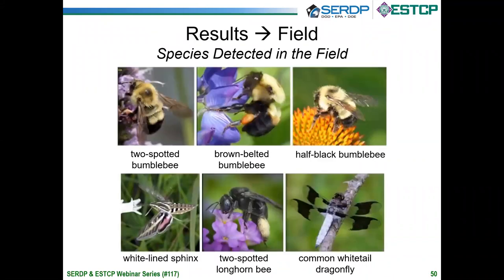In the field, we found similar results. We detected a number of pollinator species — most of which we didn't directly observe — and the residual DNA left on the flowers themselves was sufficient to capture the pollinator community visiting those flower beds. We also detected unexpected things: we weren't out at night, so we didn't visually observe any white-lined sphinx moths, but sure enough they showed up. We also appeared to have dragonflies that rested on these flowers. We were able to cobble together a really good picture of what sorts of arthropod species were visiting these flowers.